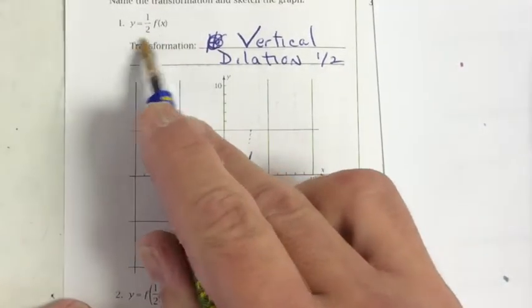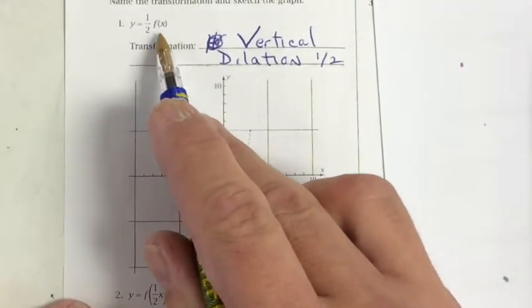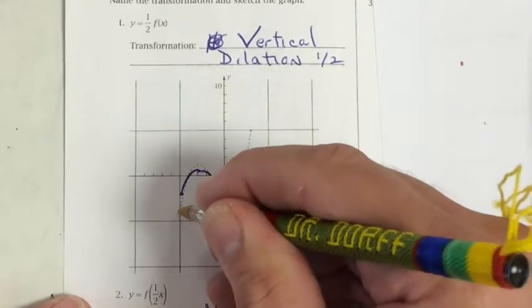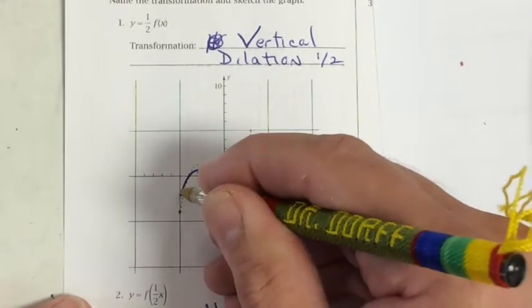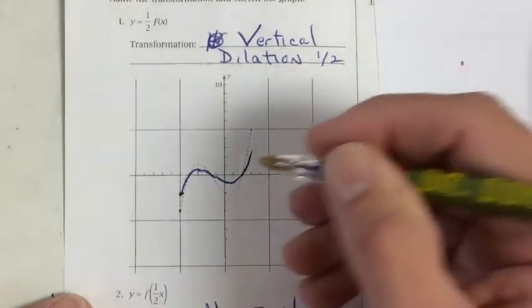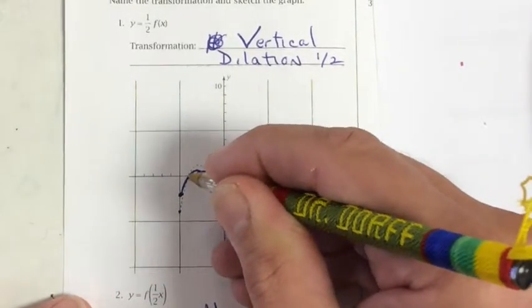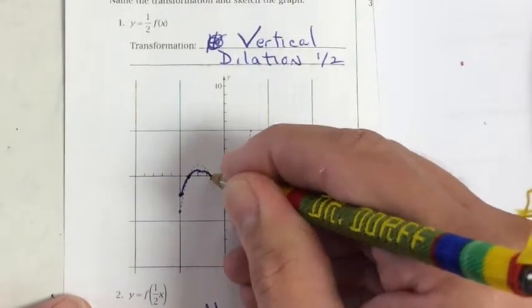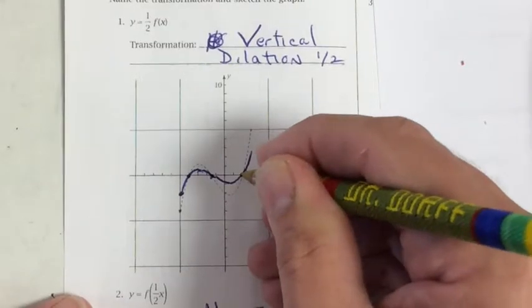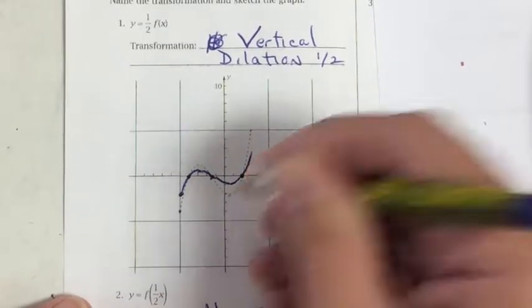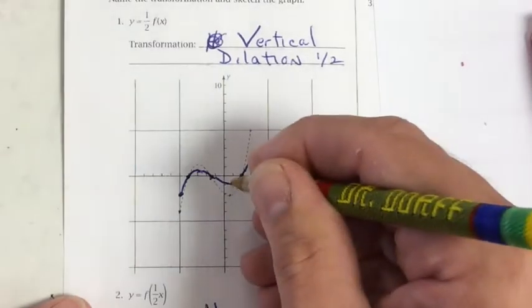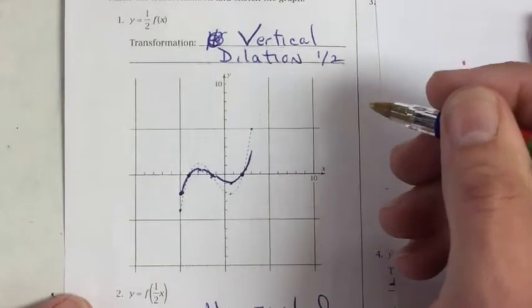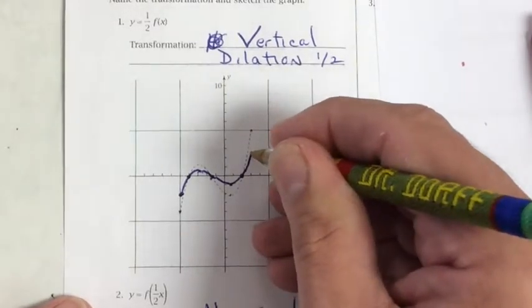Now here, what we're doing is taking one half of the value of f of x, one half of the y value. So whatever y was before, the new y value will be half. Here, where the y value was 0, it's still going to be 0. Here, where the y value was 0, it's still 0. Here, where the y value was 0, it's still 0. Here, where it was about negative 2, it will become about negative 1. Here, where the value was just about 5, it will become just about 2 and a half.